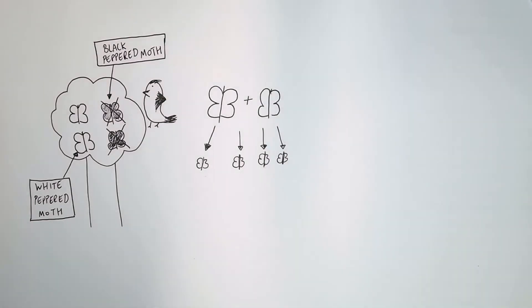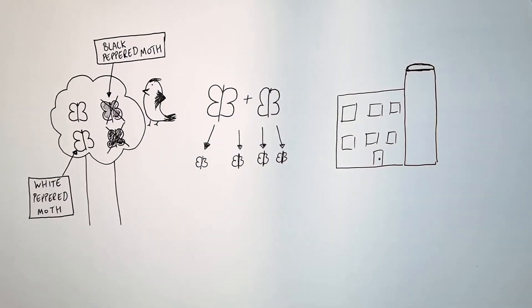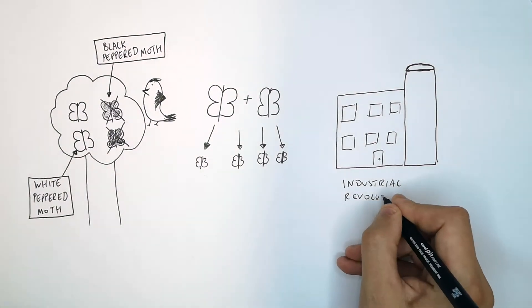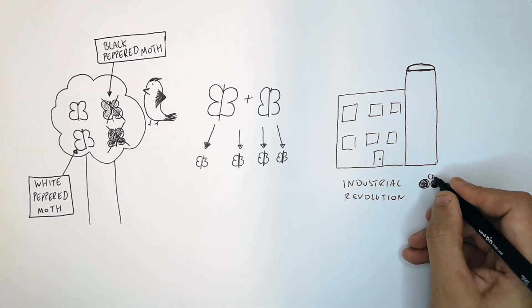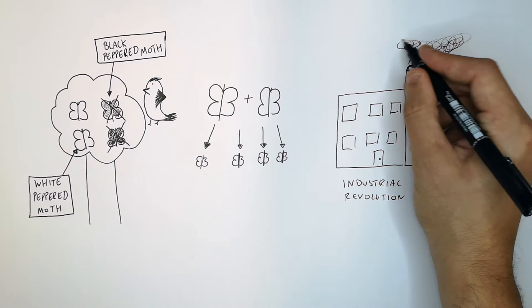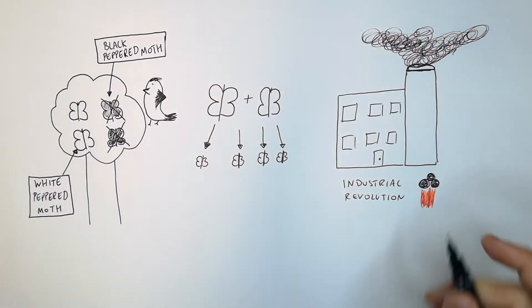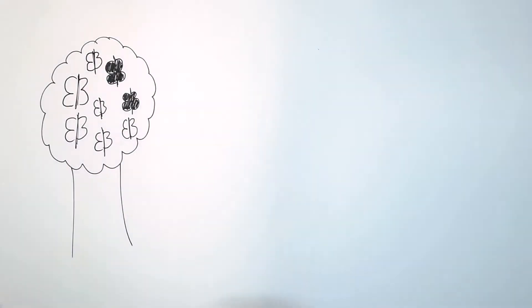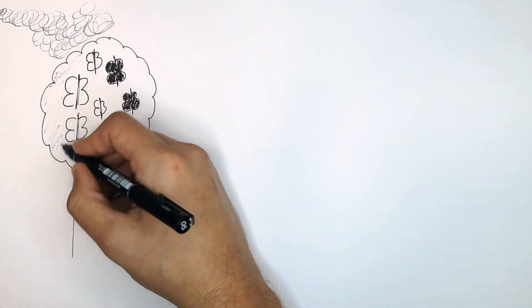For a long time, the white peppered moths were able to survive and breed and pass on their beneficial alleles. This was until the Industrial Revolution where factories started burning coal to power the factories and this led to a lot of soot and smoke being released into the atmosphere which covered the trees and made the trees darker in colour.